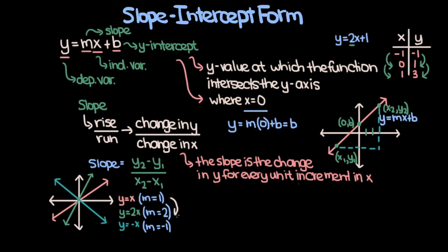Let's start by comparing the pink line and the green line. The pink line has a slope of 1, and the green line has a slope of 2. As the magnitude of the slope increases from 1 to 2, the line gets steeper. The trend is: the greater the magnitude of the slope, the steeper the line.